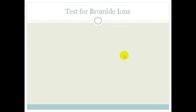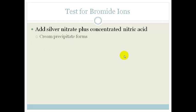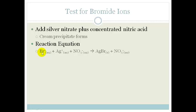If we look at the bromide ions, we add the silver nitrate plus the concentrated nitric acid, we end up with a cream precipitate. The reaction here is the bromide minus plus the silver plus plus the nitrate ion. The silver plus and the bromide minus join up together to form a precipitate, which is AgBr, silver bromide. Note the little subscript of an S because it is a precipitate, it is a solid.